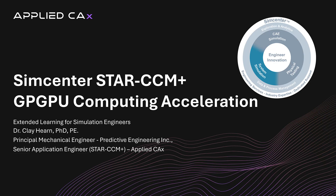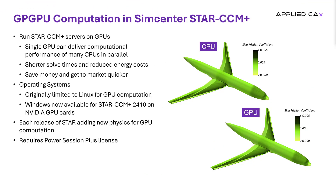This is Clay Hearn with Applied CEX with an overview of GPU computation acceleration in Simcenter Star CCM+. For a couple years now, Simcenter Star CCM+ has introduced and improved the capability for solving physics on general purpose graphic processing units, also known as GPUs. The benefit is that a single GPU can deliver the computational performance of many CPUs in parallel with no sacrifice to solution quality. As we see here with the plots on the right for an aerodynamic simulation of an aircraft, we get the same results for CPU and GPU-based solutions.